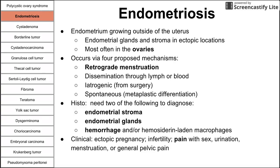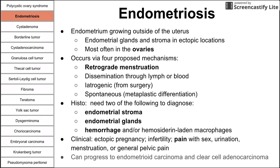Clinically, endometriosis may present with ectopic pregnancy, infertility, and pain — including pain with sex, urination, defecation, or general pelvic pain. Lastly, this can progress to endometrioid carcinoma and clear cell carcinoma.